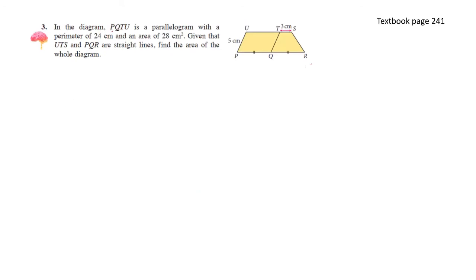In the diagram, PQTU is a parallelogram with a perimeter of 24 cm and an area of 28 cm squared. Given that UTS and PQR are straight lines, find the area of the whole diagram. We don't know the slant length, so let's label it as x. Since it's a parallelogram, opposite sides are equal, so the other slant side is also x.